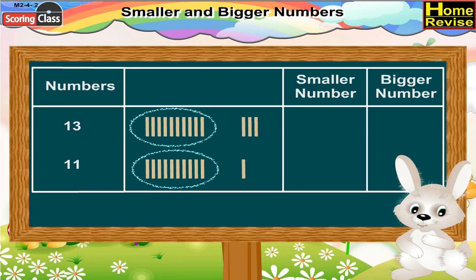Now that you have created a group of 10 lines in both numbers, let us find the remaining lines. In number 13, 3 lines remain. In number 11, 1 line remains. Well, 3 lines is bigger than 1 line. So, 11 would be the smaller number and 13 would be the bigger number.